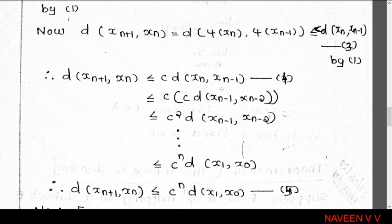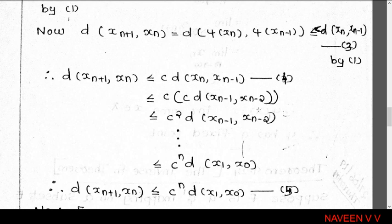Applying the result again: d(x_n, x_{n-1}) ≤ c · d(x_{n-1}, x_{n-2}). Therefore d(x_{n+1}, x_n) ≤ c · c · d(x_{n-1}, x_{n-2}) = c² · d(x_{n-1}, x_{n-2}). Continuing this process inductively, we obtain d(x_{n+1}, x_n) ≤ c^n · d(x_1, x_0).